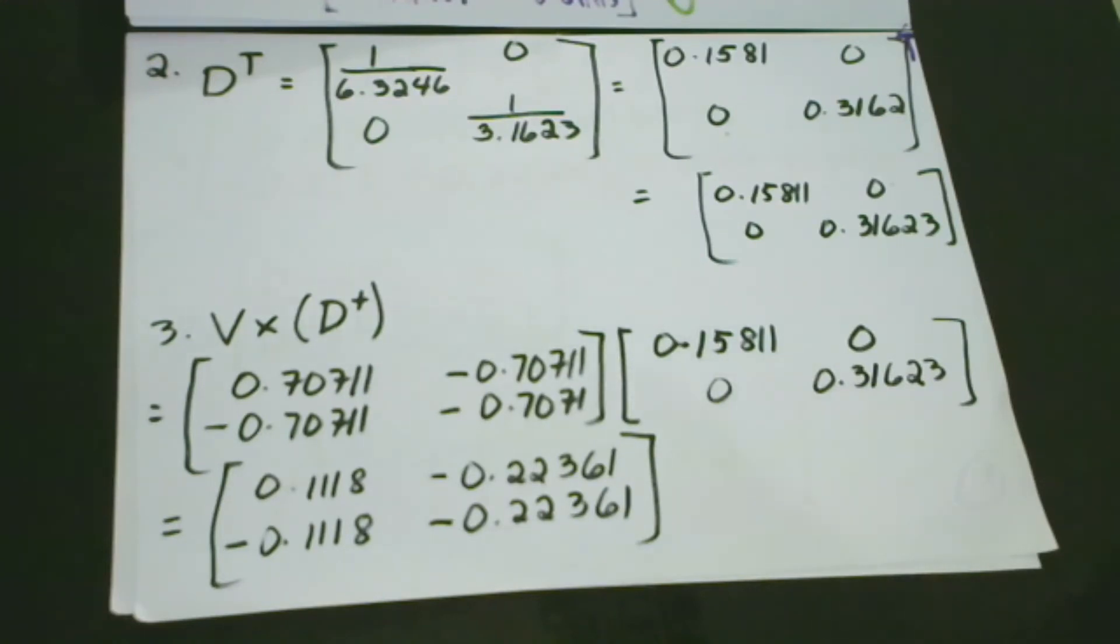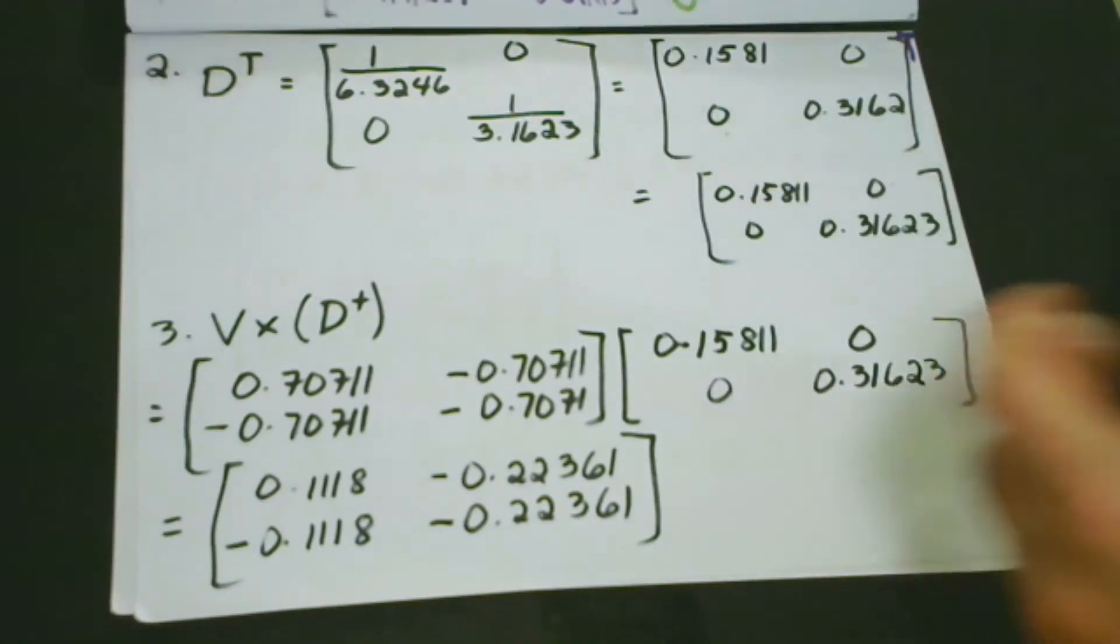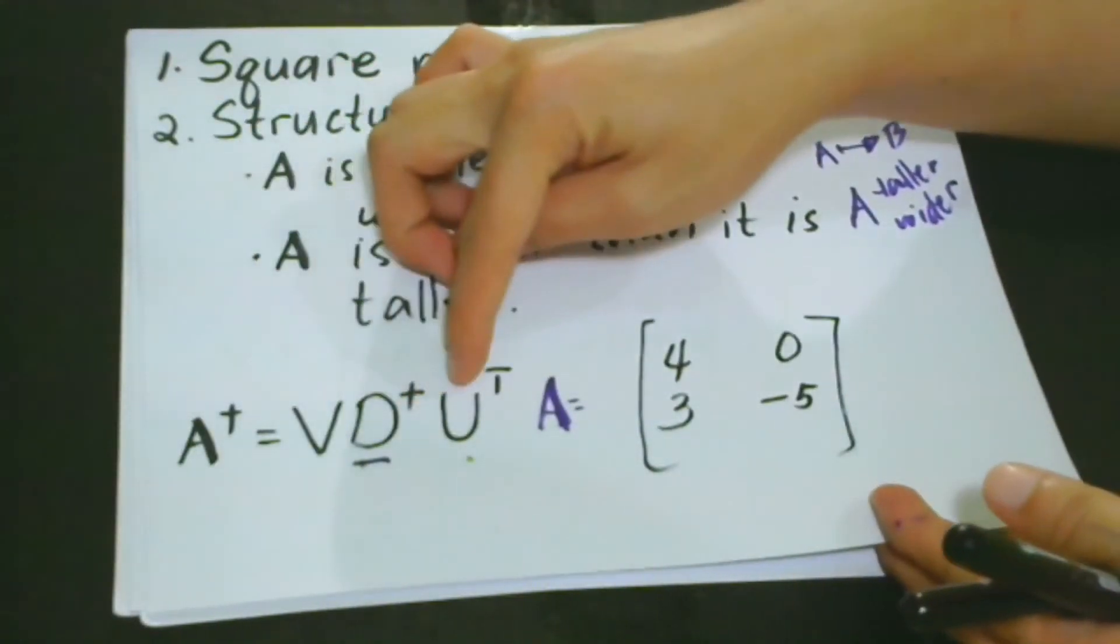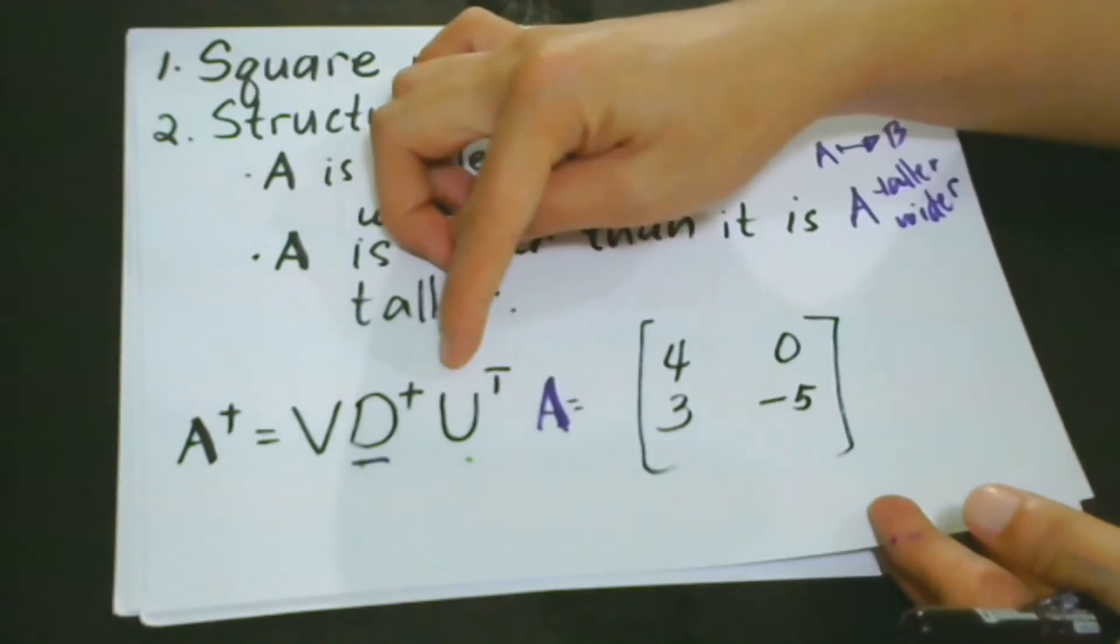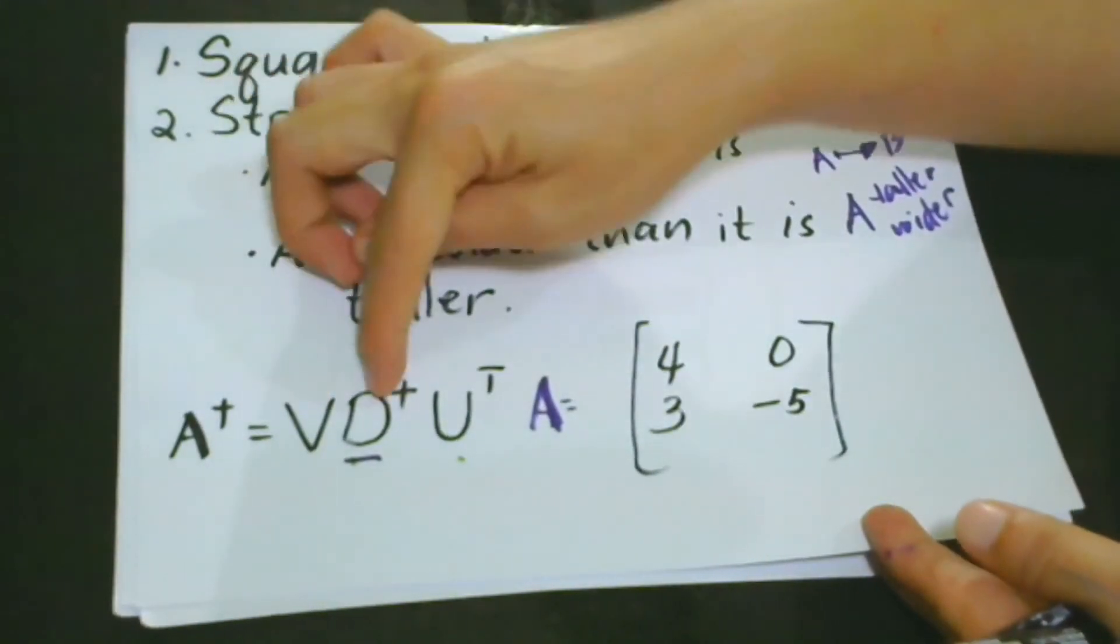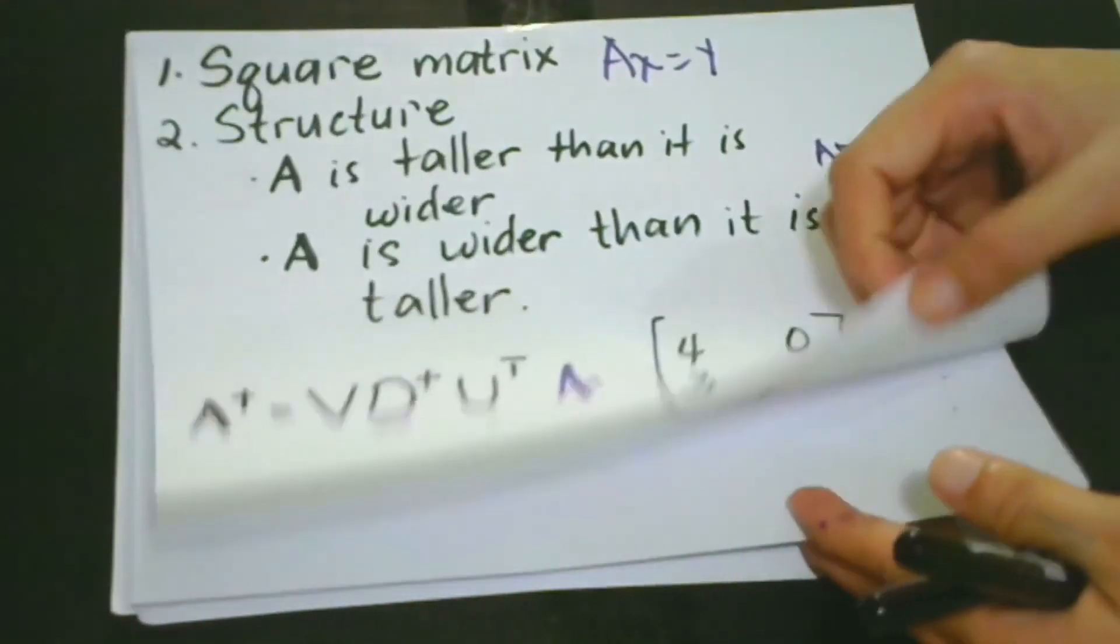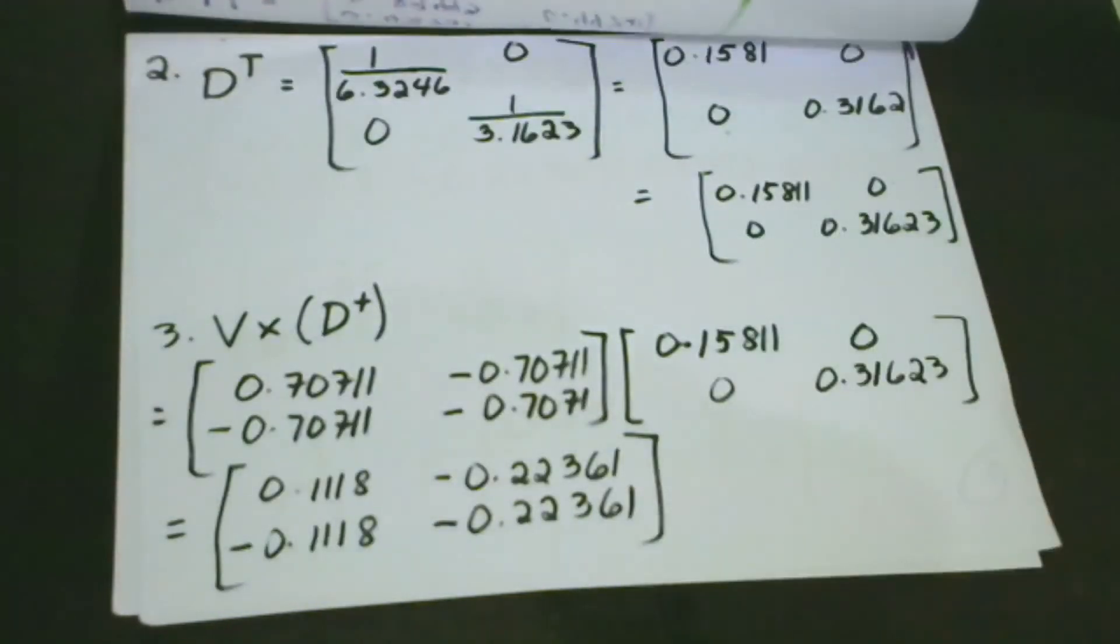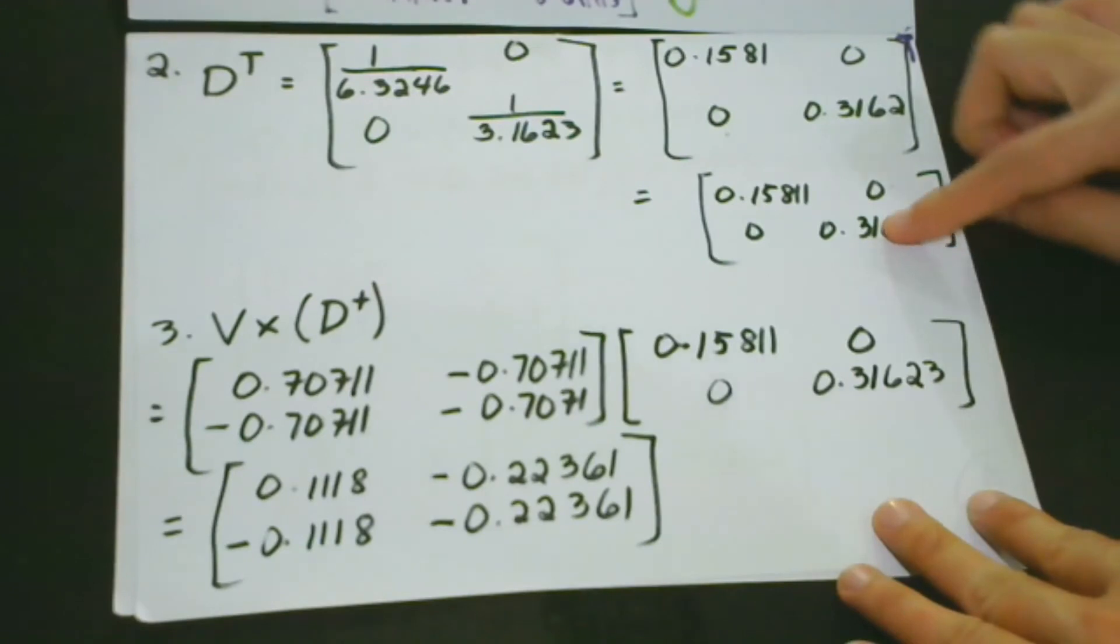I think we are ready for our third step, which is the multiplication of the first two matrices in the equation. So let's go back first to our equation. Basically, what we will do here is that we're going to multiply the V and then the D inverse. What is our V? The V is here. And then the D is this.